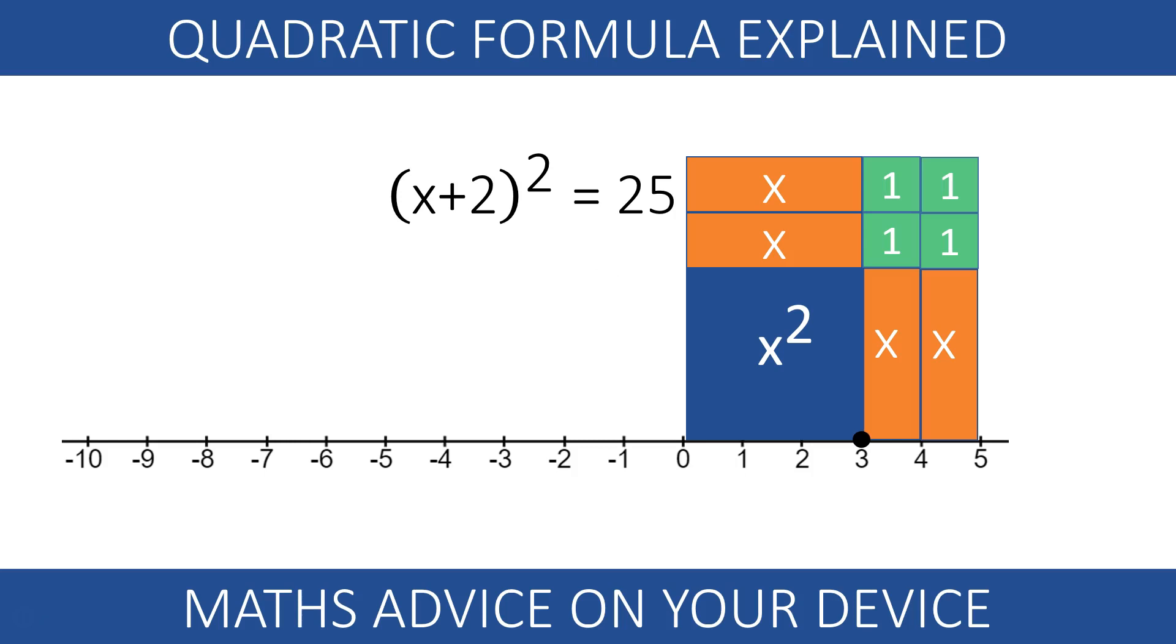But wait! There is another number whose square is 25. It is the number negative 5. Negative 5 times negative 5 is positive 25. This gives us the second solution of the quadratic equation. x equals negative 7.